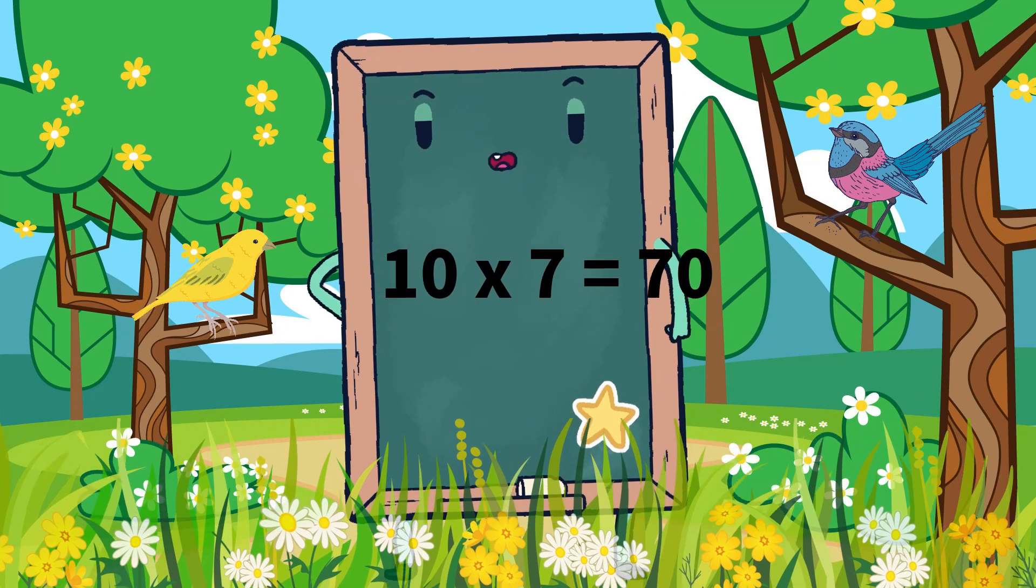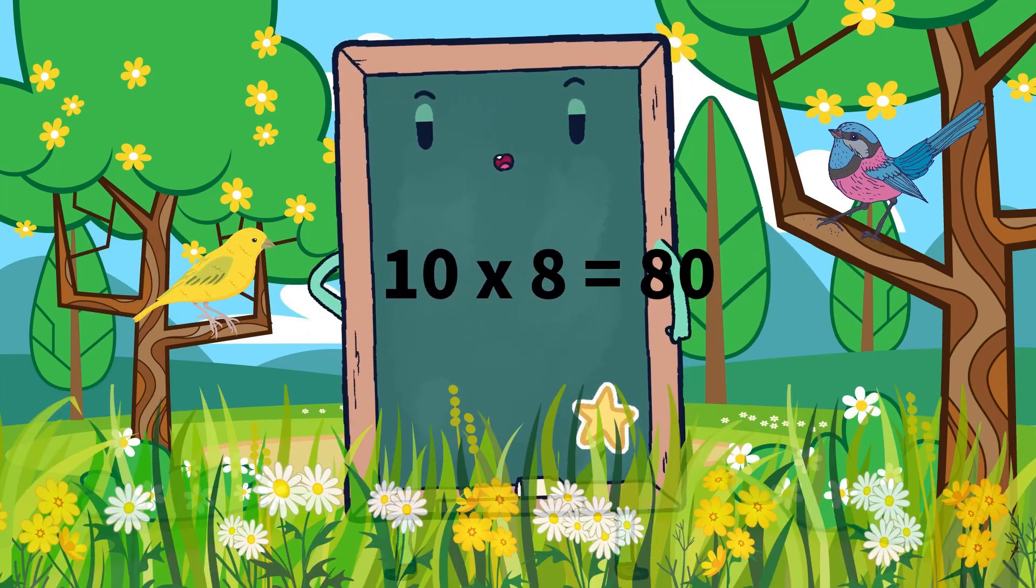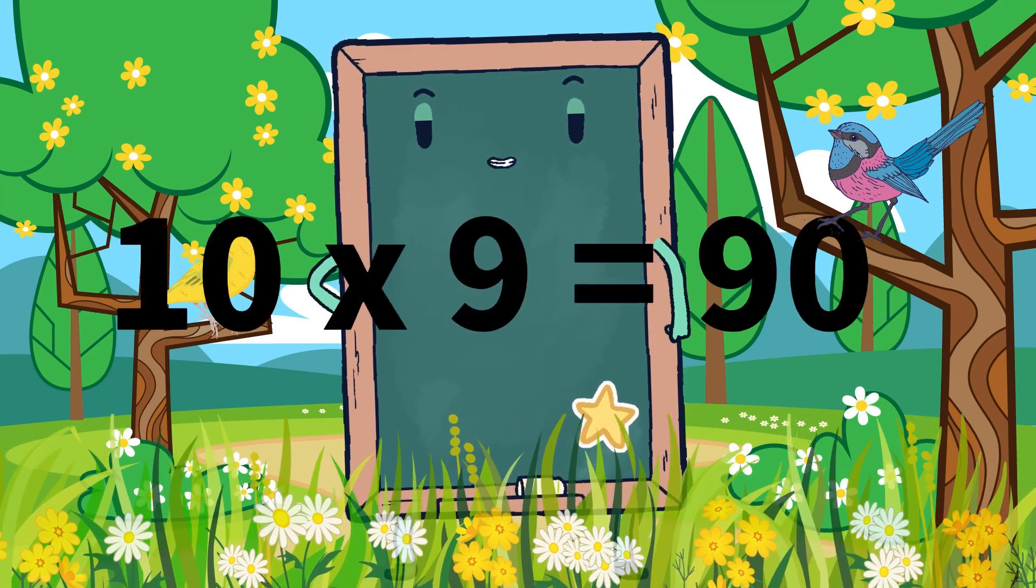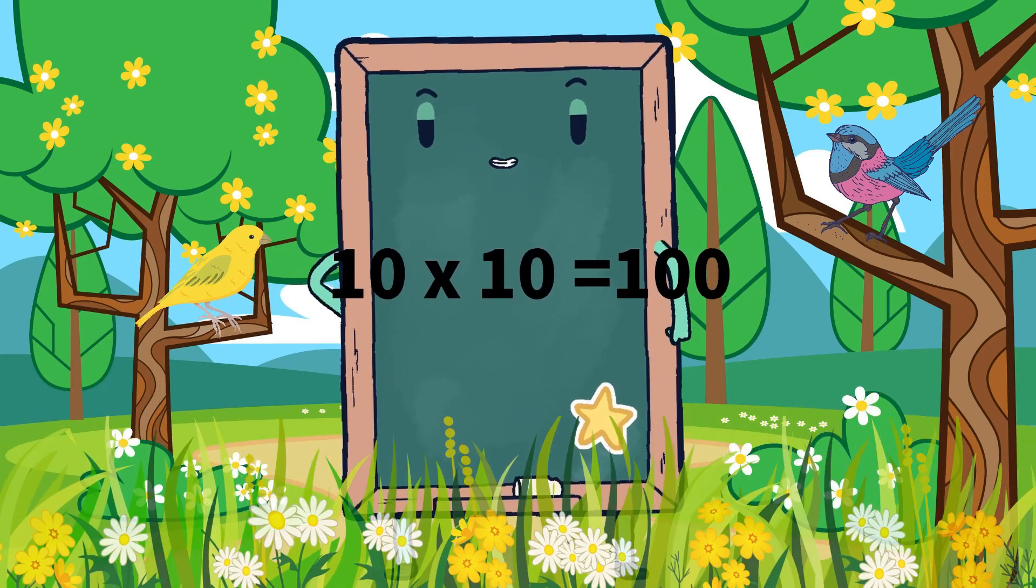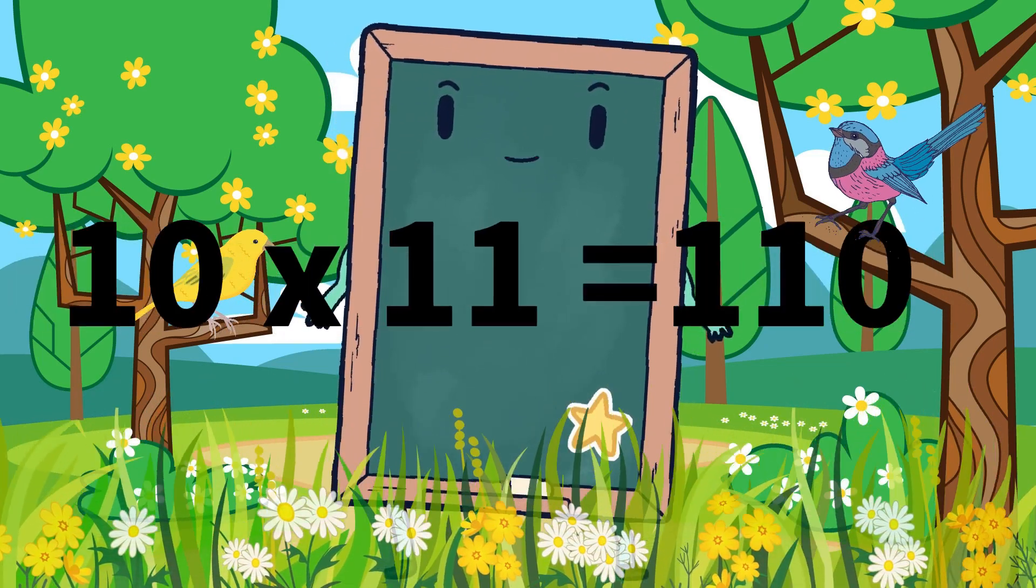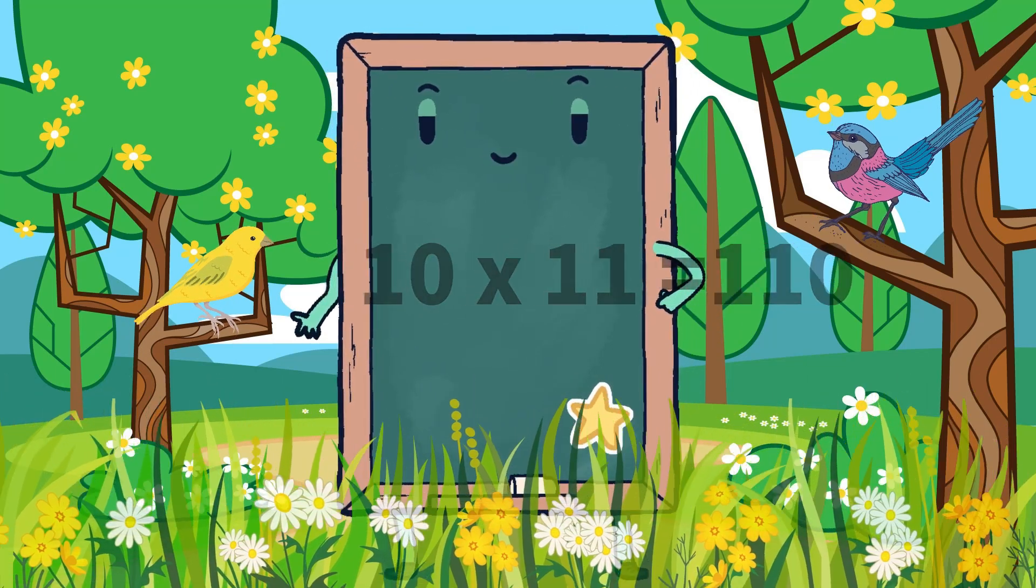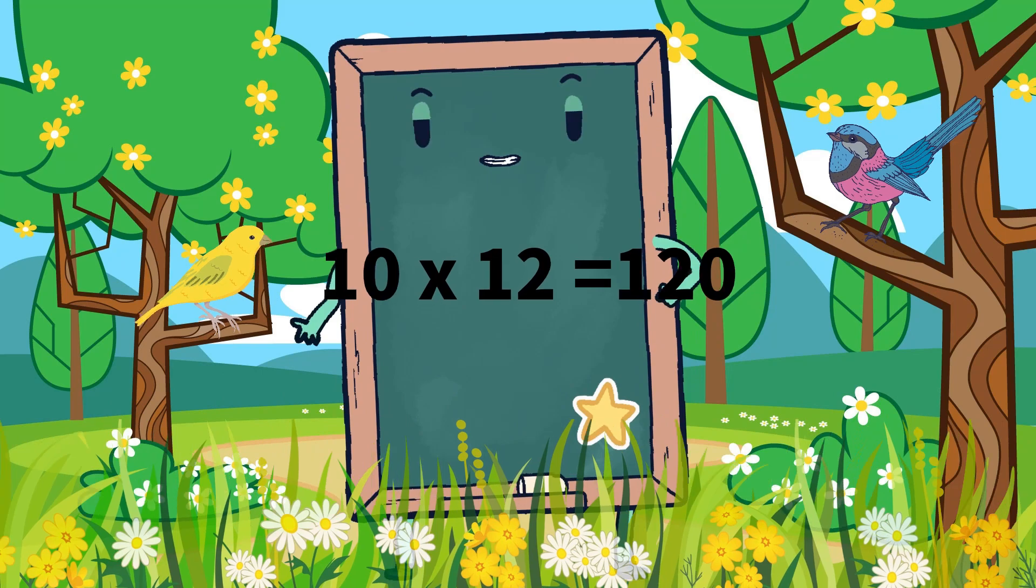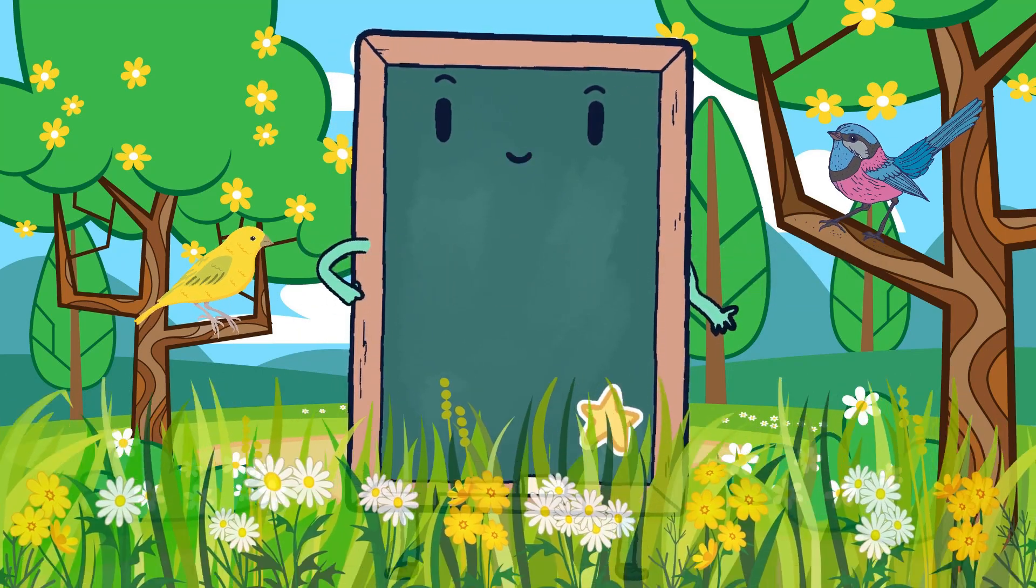10 eights are 80, 10 nines are 90, 10 tens are 100, 10 tens are 100, 10 elevens are 110, 10 elevens are 110, 10 twelves are 120, 10 twelves are 120. So kids,